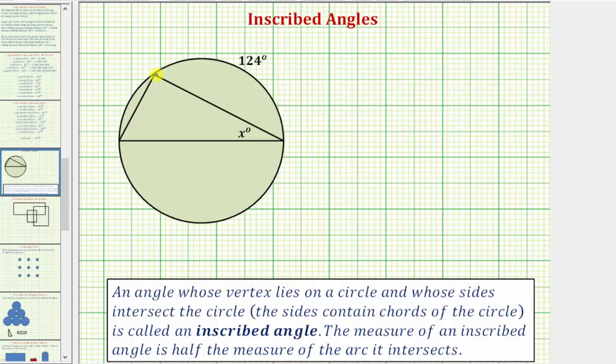And notice how they're also telling us the measure of this arc here is 124 degrees. Well notice how this arc is half the circle, which means the measurement of this arc would be 180 degrees.